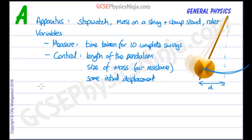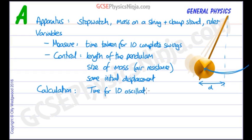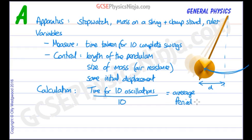The calculation we would do once we've measured ten swings backwards and forwards would be fairly straightforward: the time for ten oscillations or cycles divided by ten. That would give us the average period of the pendulum. Easy as that.